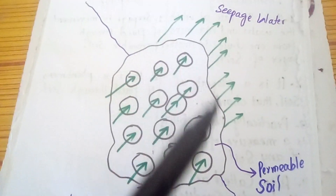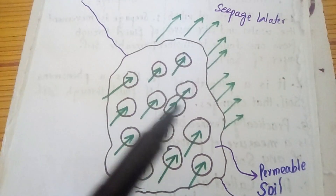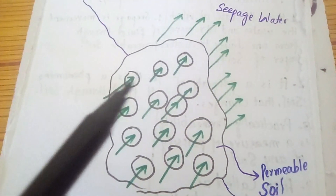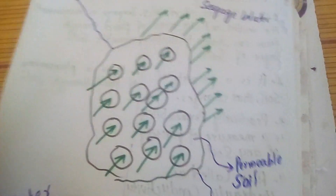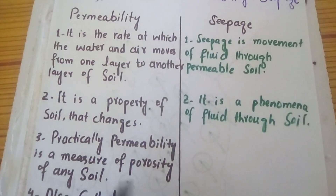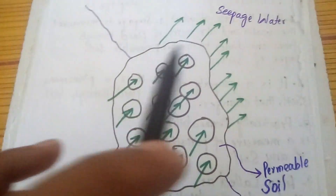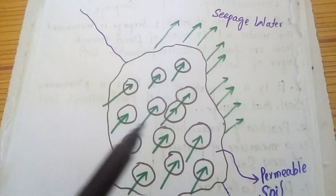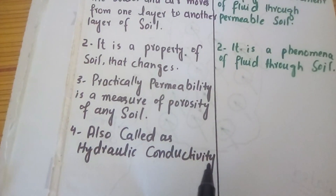The water which is actually flowing through the pores of the permeable soil is the seepage. So permeability is a property of any soil because the pores are a property of the soil, while seepage is the phenomenon or movement of flowing water. Practically, permeability is a measure of the porosity of any soil — the summation of all pores. We can also call permeability hydraulic conductivity.